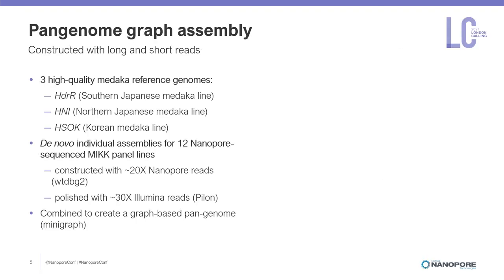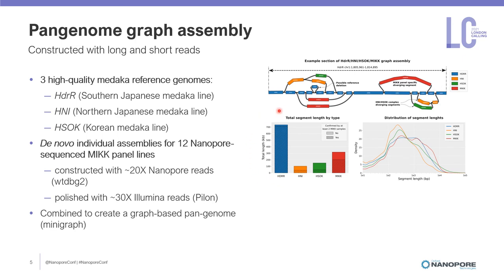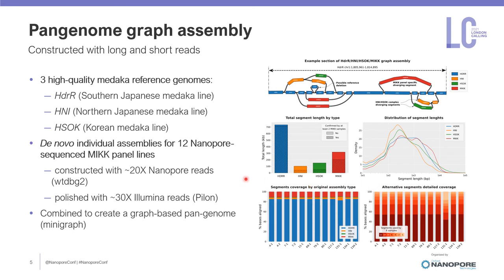To explore this further, we constructed a pan-genome graph assembly by combining three high quality medaka reference genomes — HDRR, HNI, and HSOK — with de novo individual assemblies that we constructed for each of the 12 nanopore-sequenced MYK panel lines. We successively combined these assemblies into a single pan-genome graph, starting with HDRR and then adding the other reference genomes and finally the individual MYK assemblies. Here we have an example section of the graph assembly with the standard HDRR reference in blue, divergent segments for HNI and HSOK in orange and green, and in red the segments that are specific to the MYK panel. You can see that most segments align to the standard HDRR reference, but a substantial proportion is specific to the MYK panel, and of those segments, a large proportion is unique to a single MYK line. This pattern is generally consistent across all 12 lines.